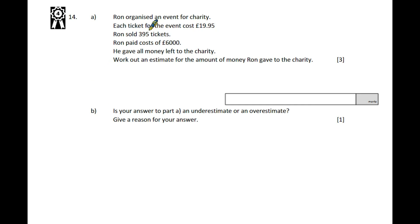Question 14: Ron organized an event for charity. Each ticket cost £19.95, he sold 395 tickets, paid £6,000 in costs, and gave all money left to charity. Estimate the amount. Round the tickets to £20 and 395 to 400. 400 tickets at £20 each is £8,000. Take away the £6,000 costs, and the amount given to charity is £2,000.